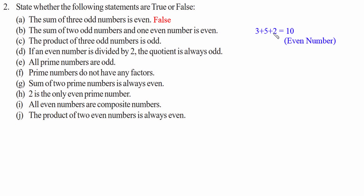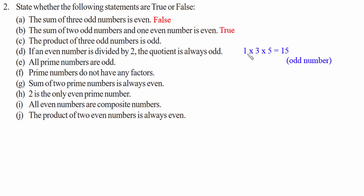Statement c — the product of three odd numbers is odd. Taking 1 times 3 times 5 gives 15, which is odd, therefore statement c is true. Statement d — if an even number is divided by 2, the quotient is always odd. First case: 6 divided by 2 gives 3, which is odd, so it seems correct initially.